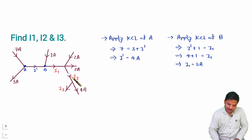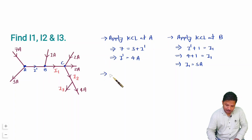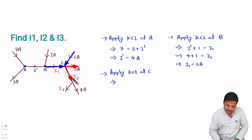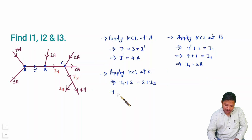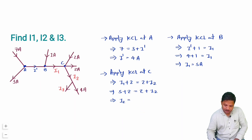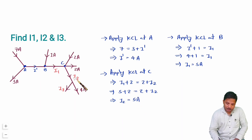To find I2, we consider node C and apply KCL. Entering currents are I1 and 2 amperes; leaving currents are 2 amperes and I2. So I1 + 2 = 2 + I2. With I1 = 5 amperes: 5 + 2 = 2 + I2, so the 2s cancel and I2 = 5 amperes.